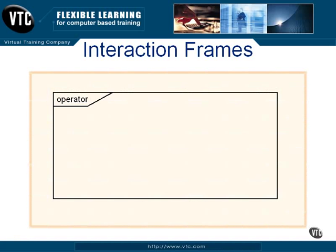This is what an interaction frame looks like. You put a box around the appropriate part of the diagram, and in the corner, you label it with some operator. You'll sometimes see the idea behind interaction frames referred to as combined fragments. That name makes sense, because what you're doing is fragmenting the sequence diagram into different parts and combining those to show the larger sequence. Interaction frames mark off a segment of a sequence diagram and label that segment or fragment with an operator — simply a word or abbreviation that provides information about the fragment inside the frame.